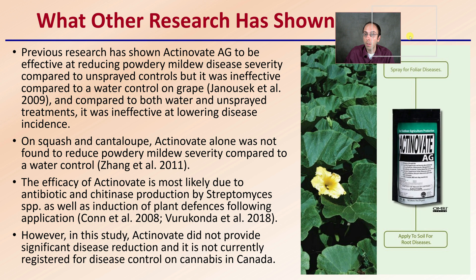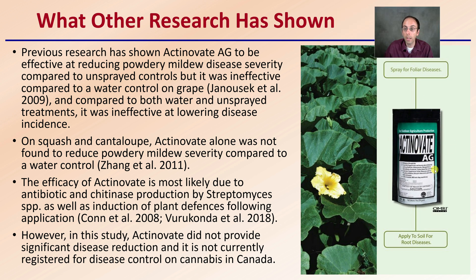What has other research shown regarding this product? There are different forms — Actinovate AG is considered the agricultural type. Previous research has shown Actinovate AG to be effective at reducing powdery mildew disease severity compared to unsprayed controls, but it was ineffective compared to a water control on grape, and compared to both water and unsprayed treatments, it was ineffective at lowering disease incidence. On squash and cantaloupe, Actinovate alone was not found to reduce powdery mildew severity compared to the water control. The efficacy of Actinovate is most likely due to antibiotic and kinase production by the streptomyces, as well as induction of plant defenses following application.